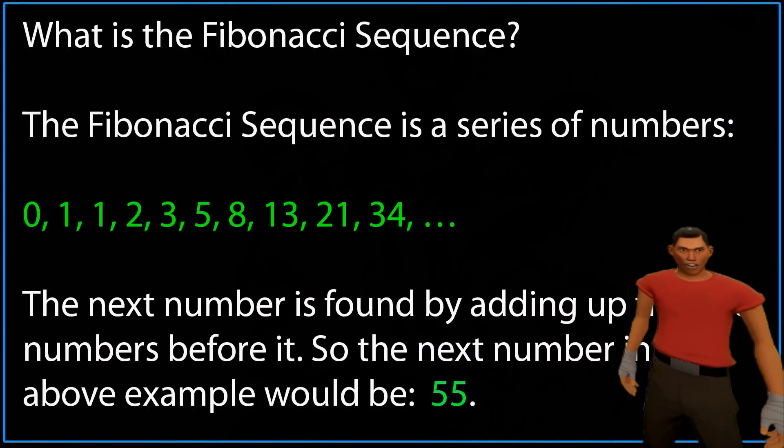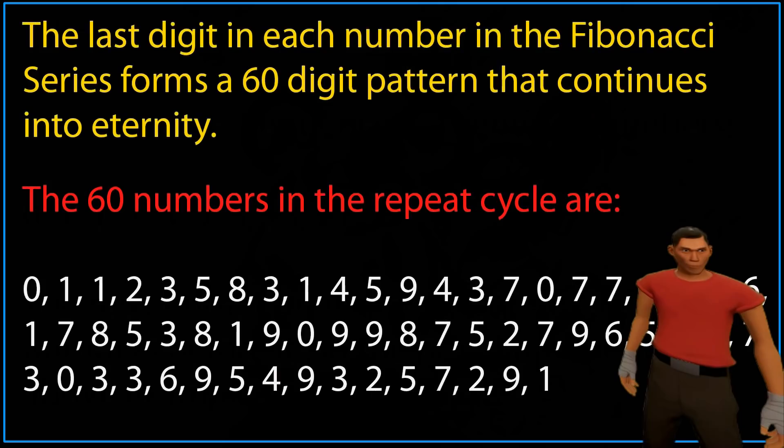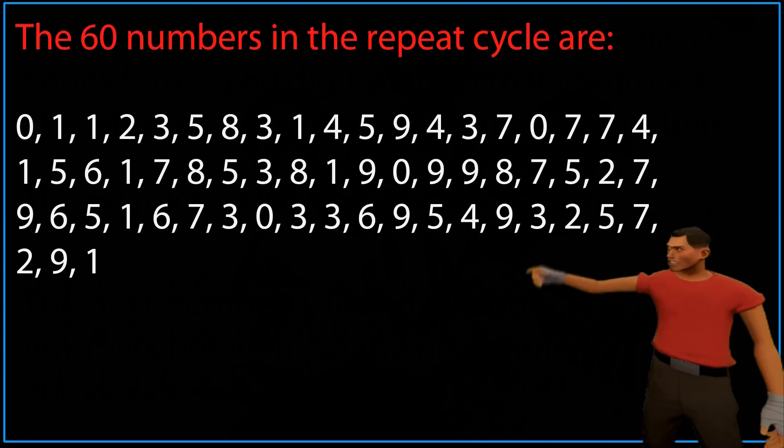If you study the Fibonacci sequence, you will find that it forms a 60 digit repeat cycle that continues into infinity. Mathematicians have known about this 60 digit pattern for some time. Here are those 60 digits.